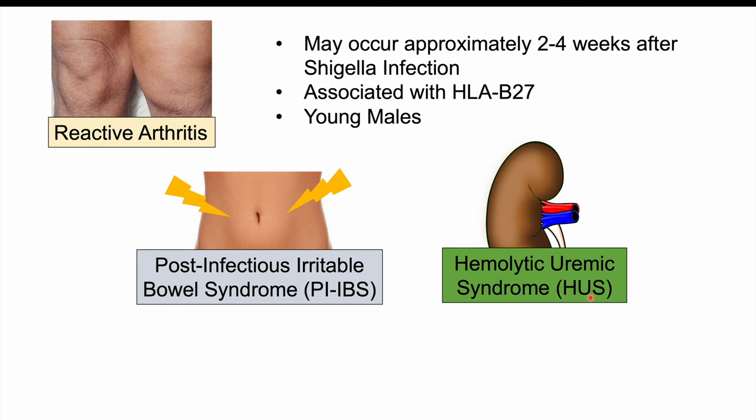HUS involves bleeding in the urine and is more likely to occur with a Shigella dysenteriae infection, as that specific species produces its own cytotoxin that can lead to bleeding from the urinary system.